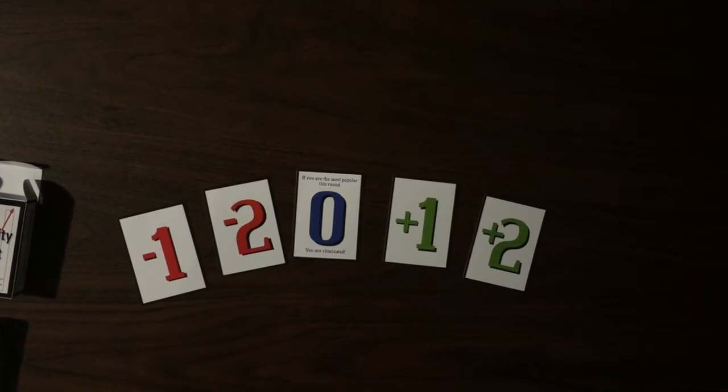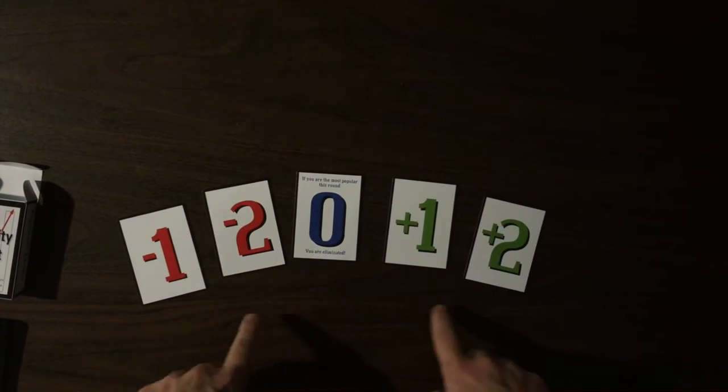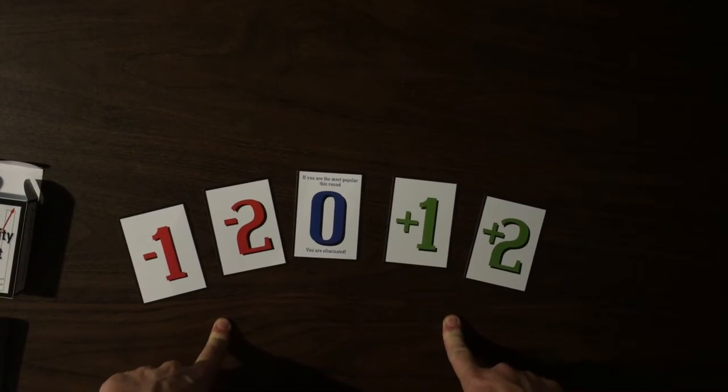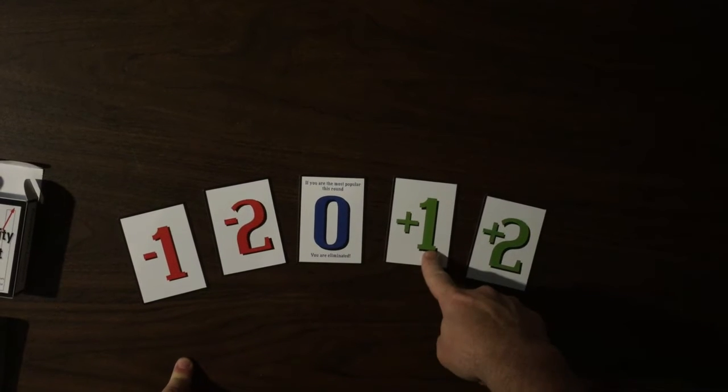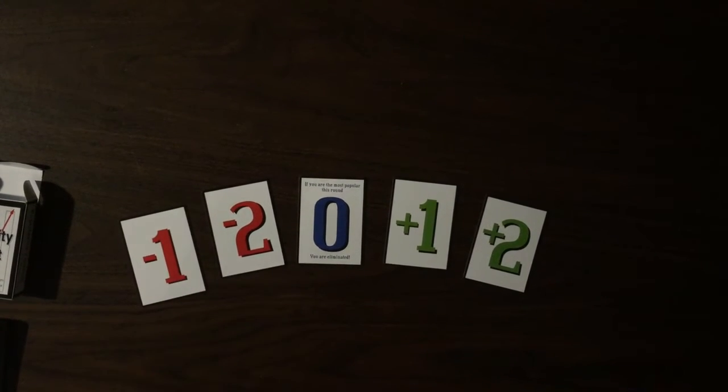Popularity Contest is a party game for 4 to 12 players. You get enough cards in the game to actually handle 12 players. Each player receives a hand of 0, positive 1, positive 2, negative 2, and negative 1.